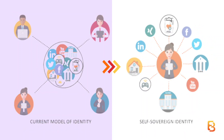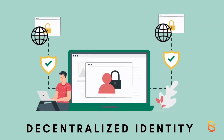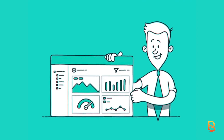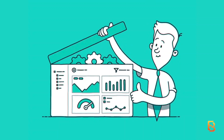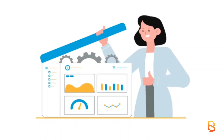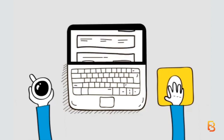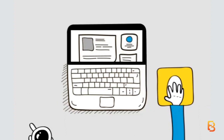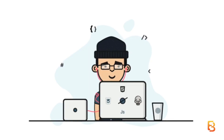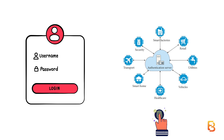This is where decentralized identities, or self-sovereign identities, come into the picture. In today's video, I'm going to give you a high-level overview of decentralized identity. The fundamental purpose of a decentralized identity is to give users control over their own data — you get the user-friendly convenience of Web2 coupled with the benefits of decentralization thanks to Web3. A decentralized identity essentially replaces password-based logins with decentralized authentication, allowing for greater control and privacy.